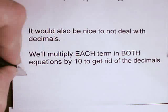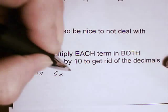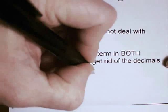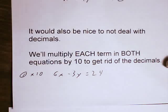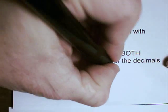So if I say number 1 times 10 gives me 6x minus 3y equals 24. Since I have multiplied by a number, I'm going to give it a new equation number, equation 3.